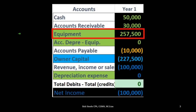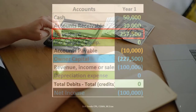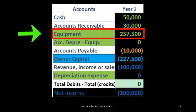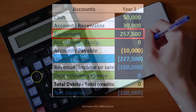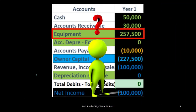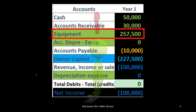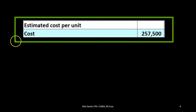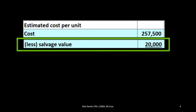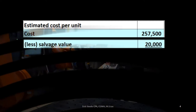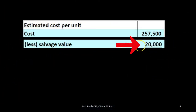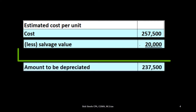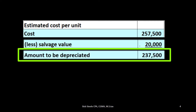Let's see how this could work. We're going to take a piece of equipment — it could be like a forklift, something that is property, plant, and equipment. We're going to put it on the books at the cost; in this case, we're talking about one piece of equipment that cost $250,500. We put it on as an asset because we need to allocate the cost over the useful life. Rather than an even allocation, we'll use the units of production method: cost minus the salvage value — the amount we believe the equipment will be valued at after its useful life — which in this case is $20,000. Therefore, we're going to depreciate $237,500 over the useful life.